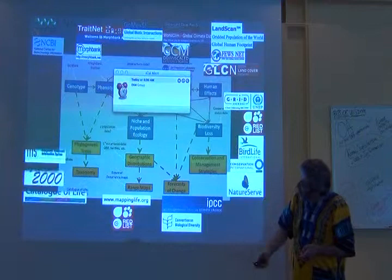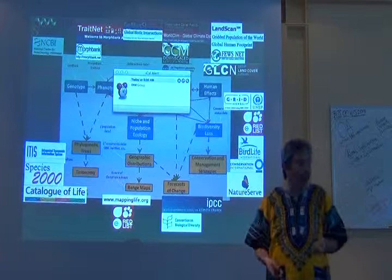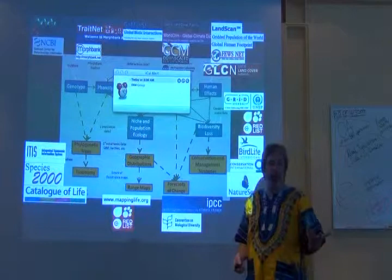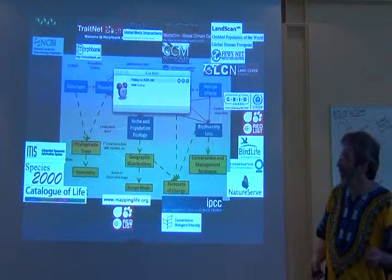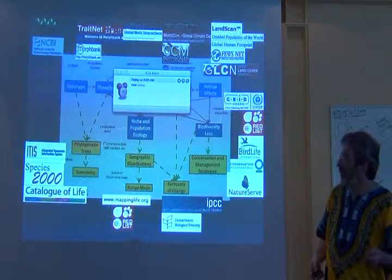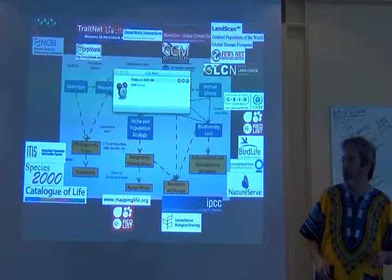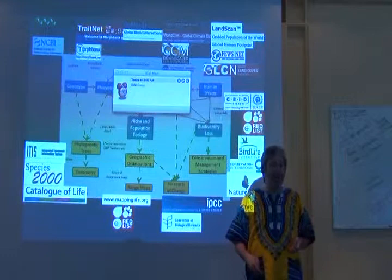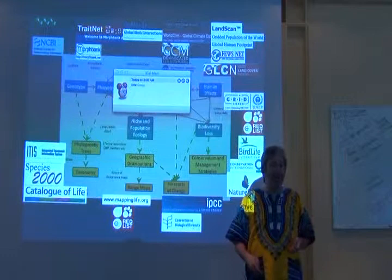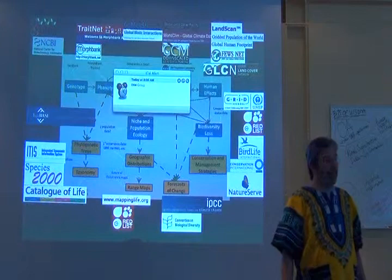For taxonomy, there have been quite a number of initiatives — ITIS is a North American thing, Species 2000, Catalog of Life, and several others essentially attempting to lay out the list of species on Earth. I heard about a recent effort being assembled and funded to put together a list of all plant species on Earth, and I've heard rumors it might not be open access. What a dumb idea. And for phylogenetic trees, there's TreeBase and a couple of other initiatives.